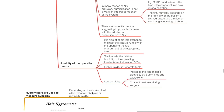Humidity of the operating theater. It is important to maintain the relative humidity of the operating theater environment at an appropriate level; traditionally the relative humidity is kept around 50%. High humidity is uncomfortable. Low humidity increases the risk of static electricity build-up, which increases the risk of fires and explosions and increases patient heat loss during surgery.